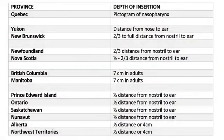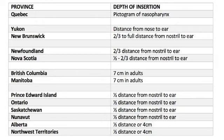Here are the guidelines currently recommended by the provinces and territories in Canada. You can see that only four of these are recommending a distance of at least two-thirds, with Quebec only showing a pictogram. Most concerning are Alberta and Northwest Territories recommending a depth of four centimeters of insertion to reach the nasopharynx for a nasopharyngeal swab.